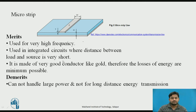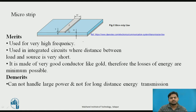Next is the microstrip line. The name itself suggests there are strips of metal with a dielectric material — one conducting strip and one grounded plane. Microstrips have applications in integrated circuits where distances are smaller. They have advantages for high frequency because the metal used in fabrication — gold — has higher conductivity and low losses. The demerit is that it is costly because it uses metals like gold and silver which have high conductivity.